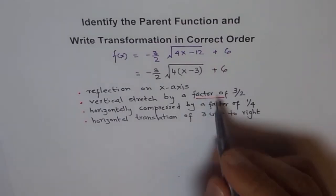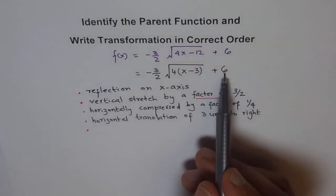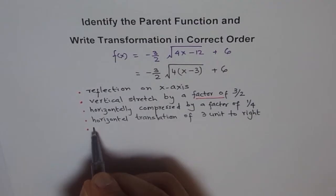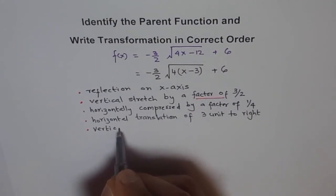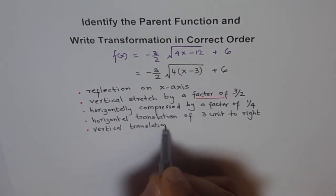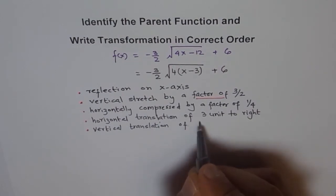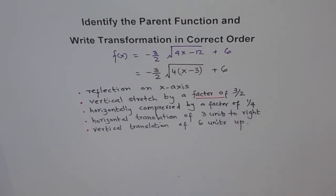You can combine these two terms together also. And then we could say, this is plus 6, so it will move up. So we say, we can write translated vertically or vertical translation of 6 units up. So this is one way of writing it. And this is the correct order of writing it.